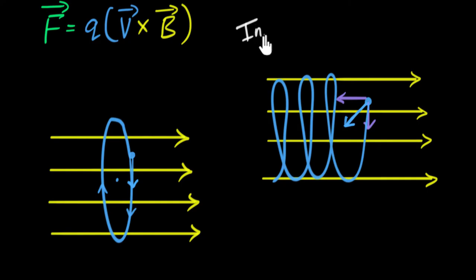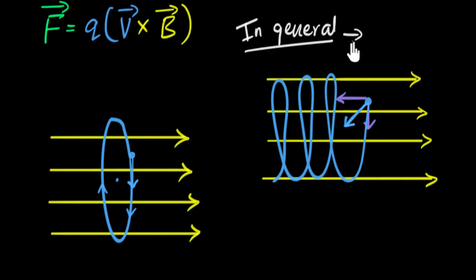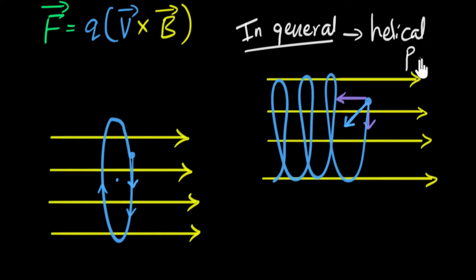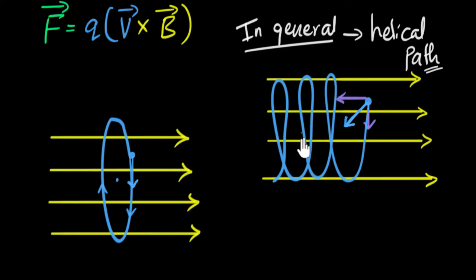In general, what we find is that particles tend to go in a helical path. The axis of the helical path is along the magnetic field, and the plane of the circle is perpendicular to the magnetic field — just like what we found for the perpendicular case.